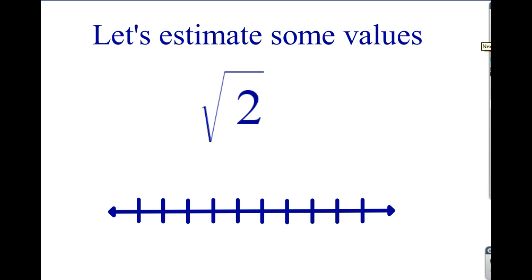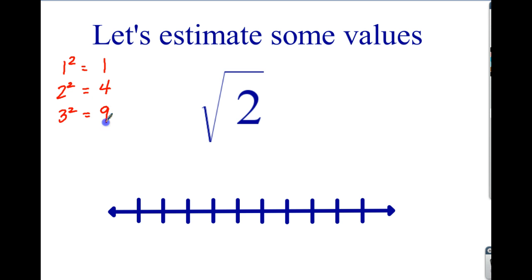Now what we're going to do is talk about estimating these and put them on a number line. One of the things we talked about in class was we generated a whole list of perfect squares. The perfect squares are those numbers that you can square and you end up with a larger number. We did 1 through 15. So, 1 squared equals 1, so 1 is a perfect square. 2 squared is 2 times 2, which equals 4. And 3 squared is 3 times 3, which is 9. We also know 0 squared equals 0.